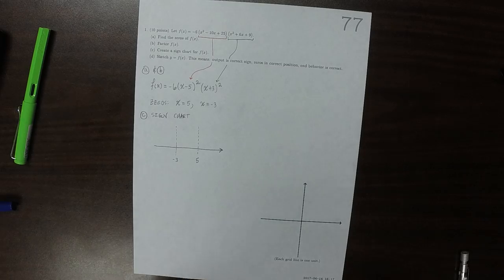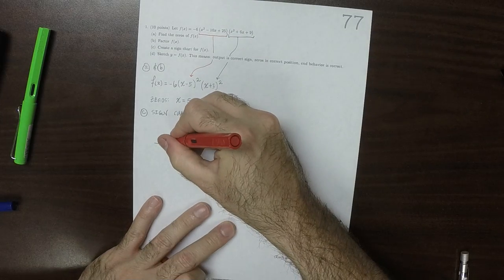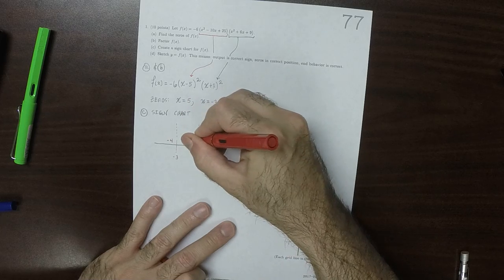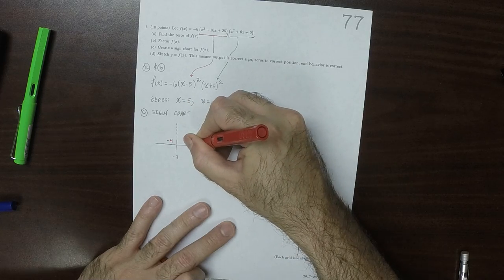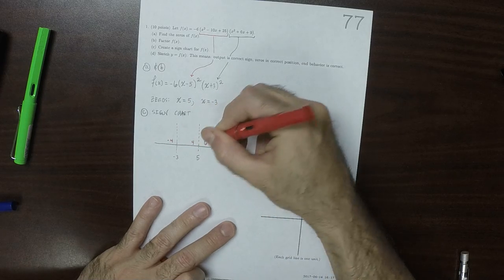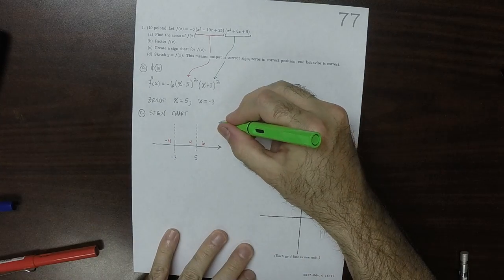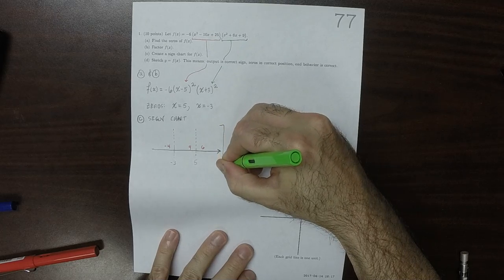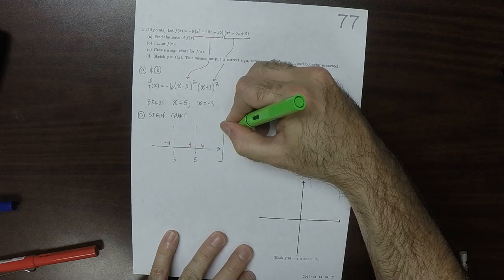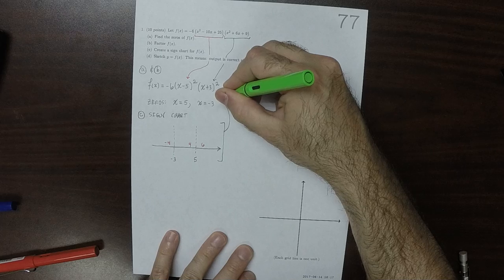So we can select points in each region. So how about negative 4, positive 4, and positive 6. And then we'll take those inputs, those test points, and we'll plug them into that expression.